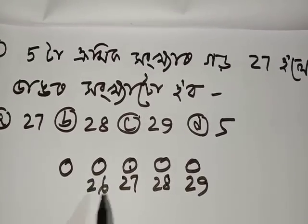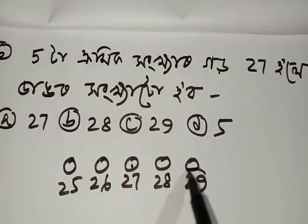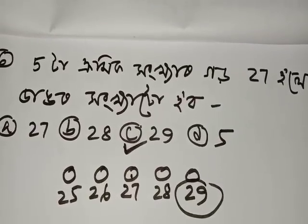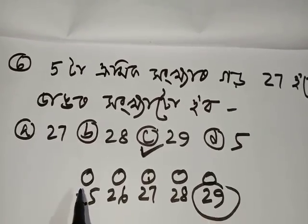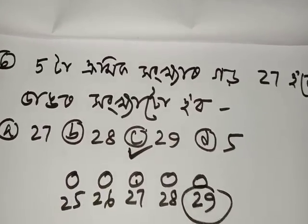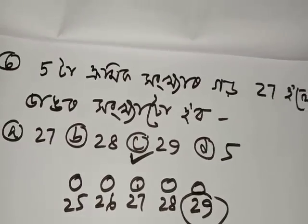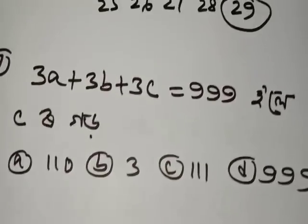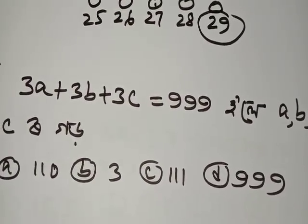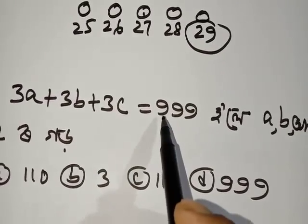This is the 20 and 20. This is the 20 option. If you want to ask the question, this is the 20 and 20. If you want to ask the question, you will be very happy. I will ask you to ask the question. This is 20 plus 20 plus 20 equals 999.